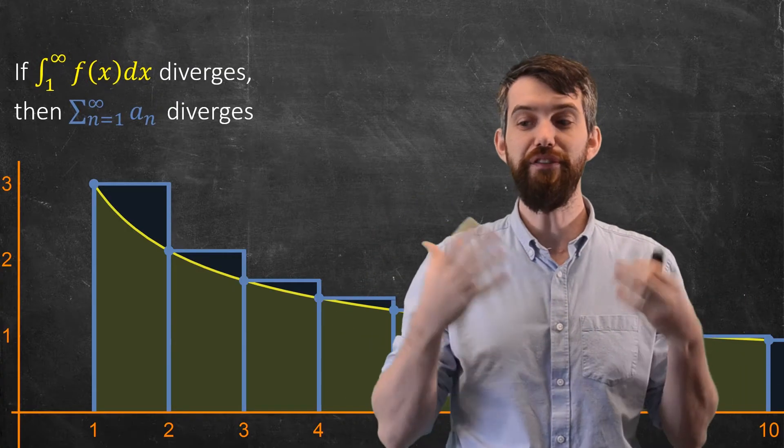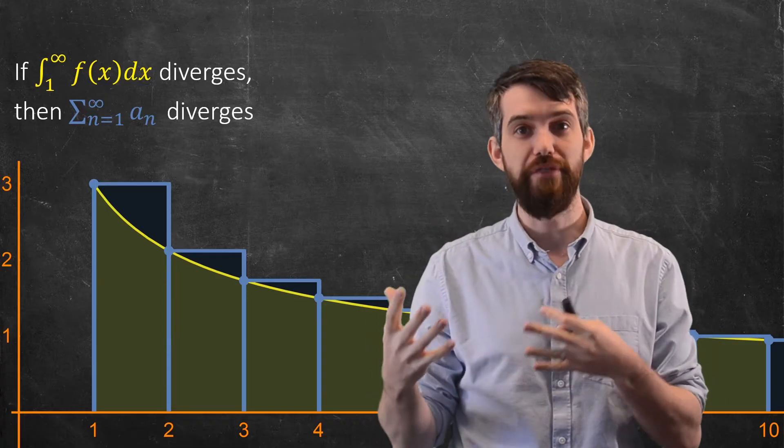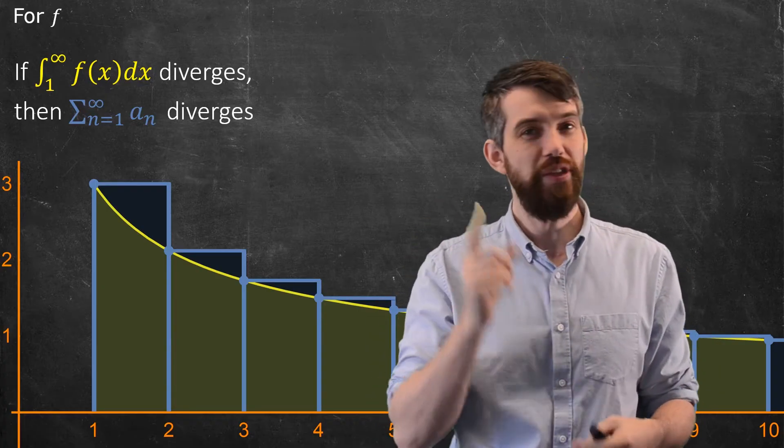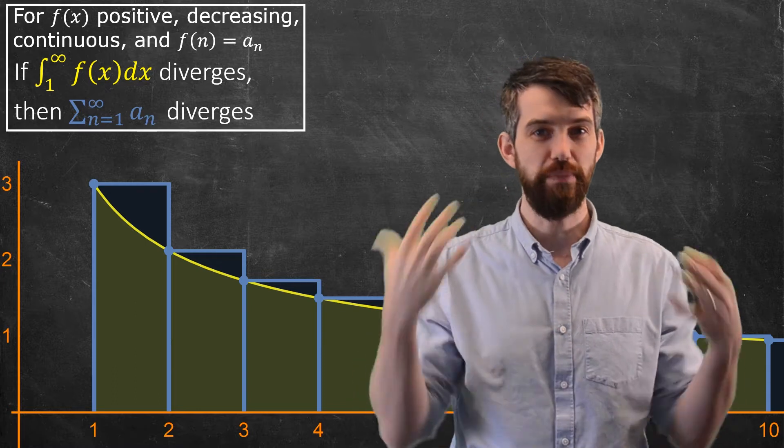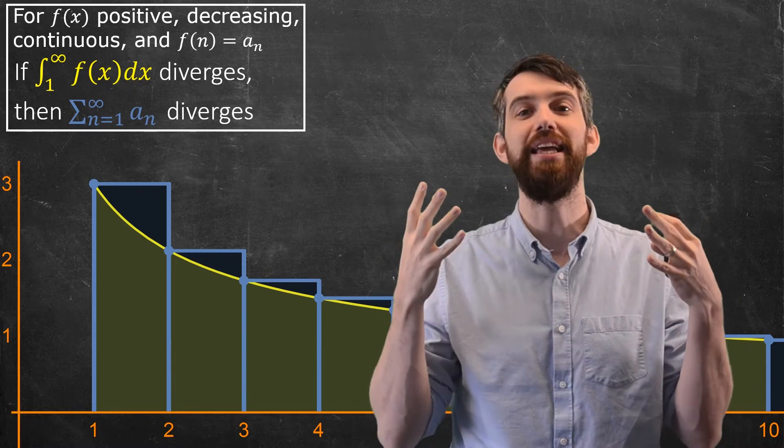So in other words, I can say that if indeed the improper integral diverges, the series does as well. And this was true in that case where your function is positive, it is continuous, and it is decreasing.